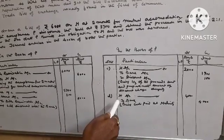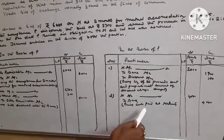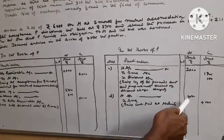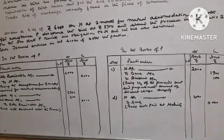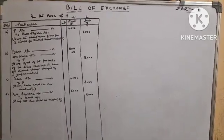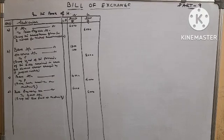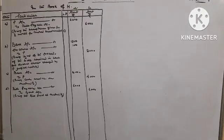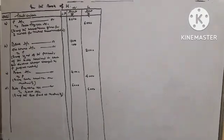H account debit to Bank, being cash paid on maturity, 4,000. In the book of H, first entry: P account debit to Bills Payable, being the acceptance given for two months for mutual accommodation, 6,000.